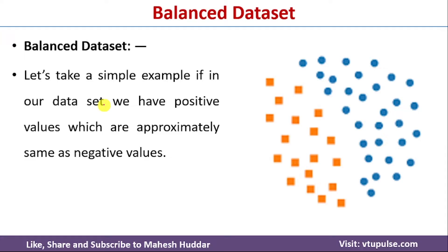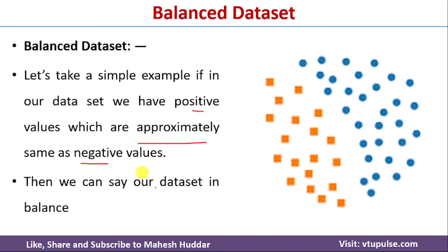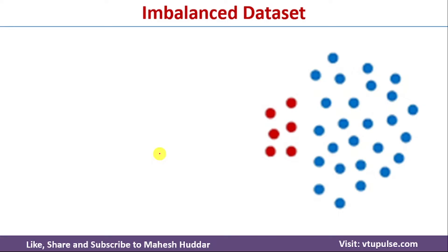A dataset is called a balanced dataset if the number of examples in each class is approximately equal. For example, if there are two classes — a positive class and a negative class — and the number of examples in each is approximately equal, the dataset is balanced. Looking at this example, the two classes represented with blue and orange colors contain almost equal numbers of examples.